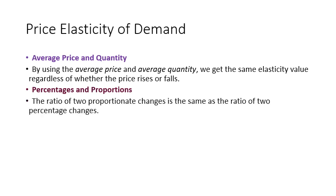The ratio of two proportionate changes is the same as the ratio of two percentage changes. So generally, percentage change in quantity over percentage change in price can simply be represented by the change in quantity over the change in price multiplied by the ratio of average price to average quantity.